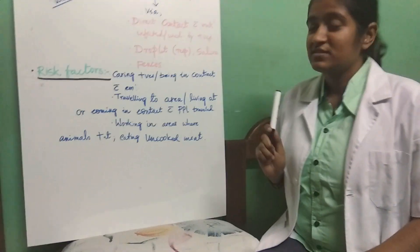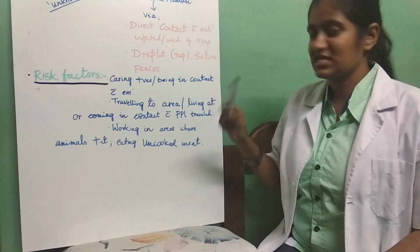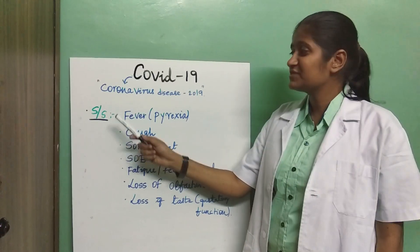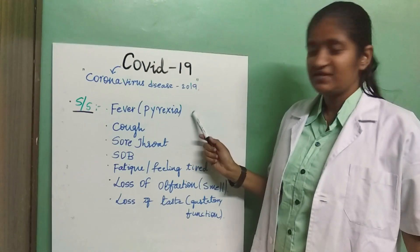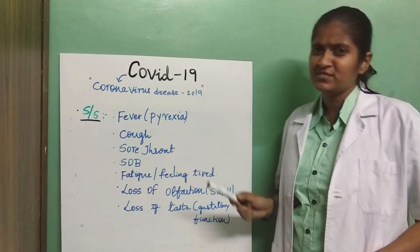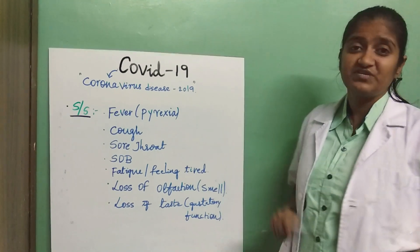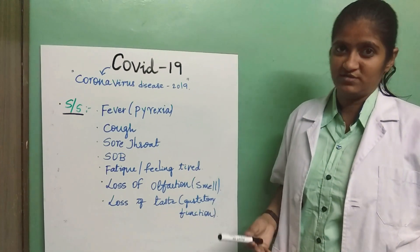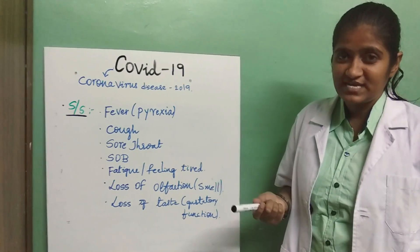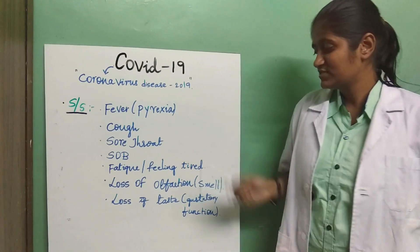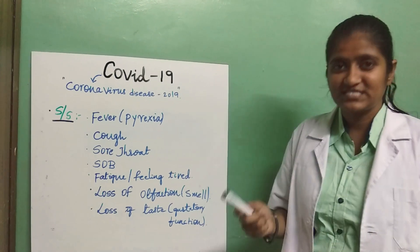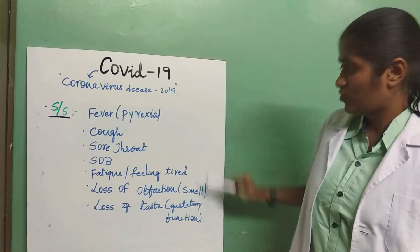Eating uncooked meat is also one of the biggest reasons for the transmission of COVID-19 and other diseases. Coming to the signs and symptoms: there is fever or pyrexia, cough, sore throat, and shortness of breath. Patients also experience fatigue — feeling very exhausted. Recent research has also found that loss of olfaction or smell, and loss of taste or gustatory functioning, are also symptoms of COVID-19.